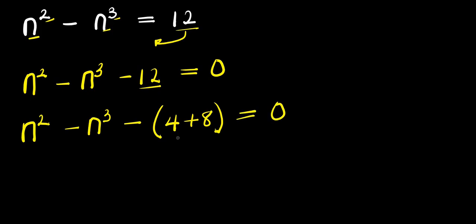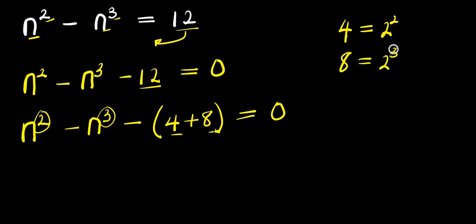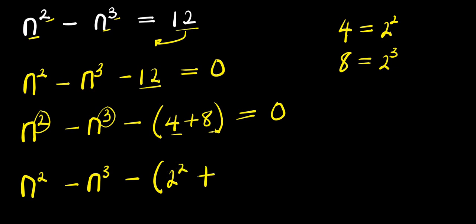Now we are going to express each of these terms here in accordance to this exponent. So remember, 4 is 2 power 2, and 8 is 2 power 3. So we have n power 2 minus n power 3 minus 2 power 2 plus 2 power 3 equals 0.